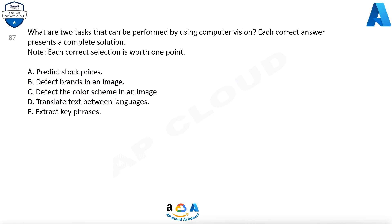Question 87: What are two tasks that can be performed by using computer vision? Each correct answer presents a complete solution. Note, each correct selection is worth one point. A. Predict stock prices. B. Detect brands in an image. C. Detect the color scheme in an image. D. Translate text between languages. E. Extract key phrases.